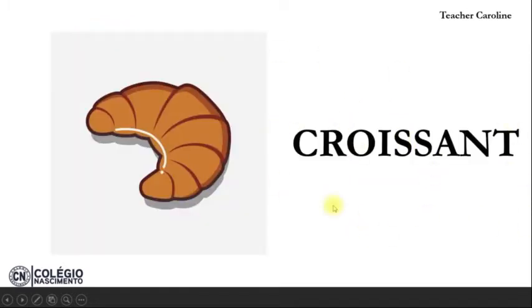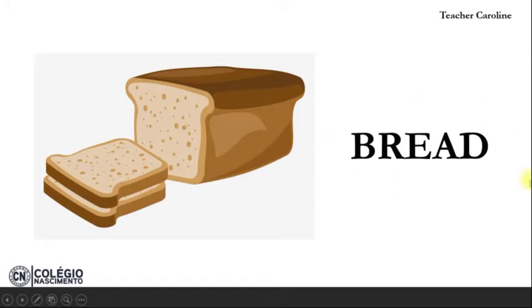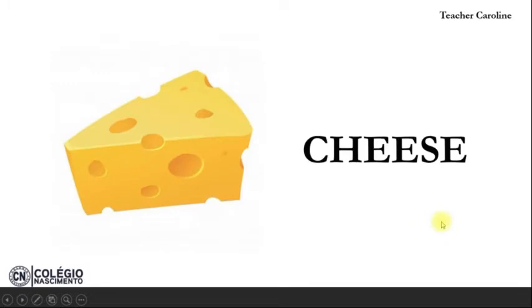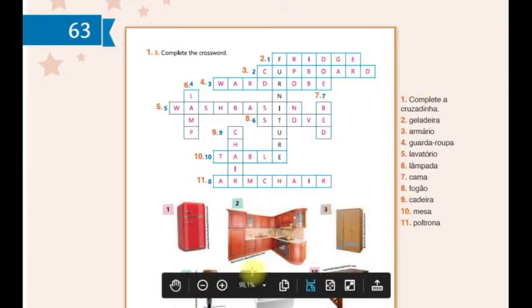Temos o croissant, que é a mesma coisa que a gente fala em português, que é o croissant mesmo. A gente pode comer recheado, de queijo, de presunto, de frango. O bread, que é o pão. Bread, bread é o pão. O cheese, cheese é o queijo. A butter, butter é a manteiga. Butter, manteiga.